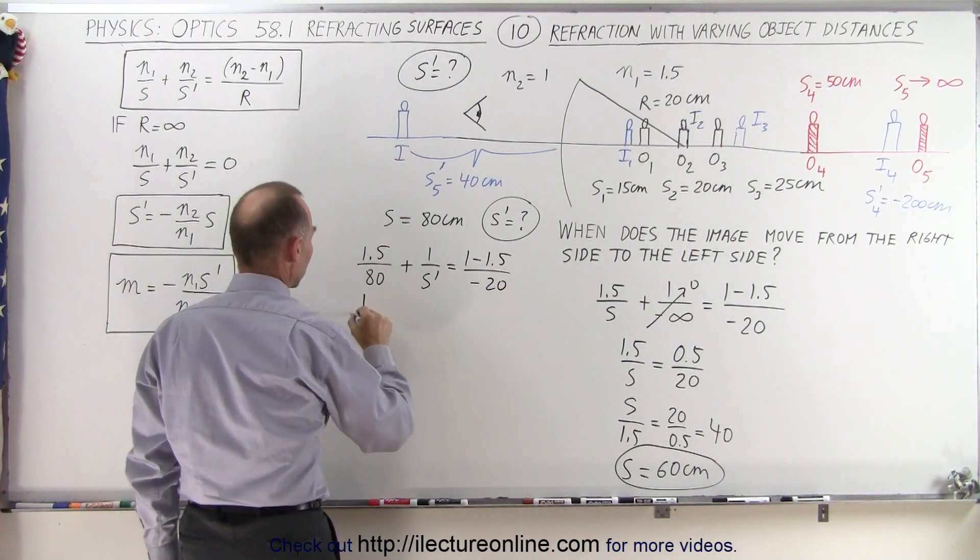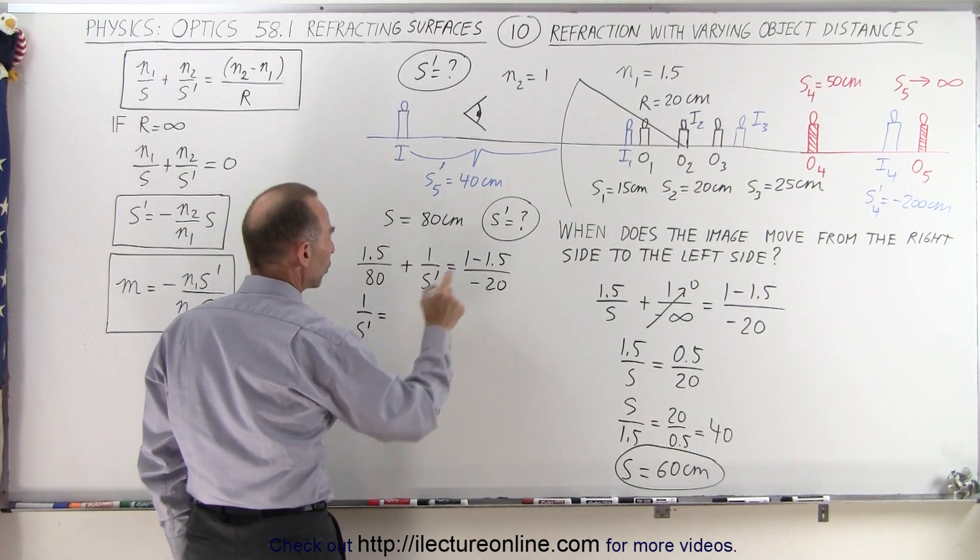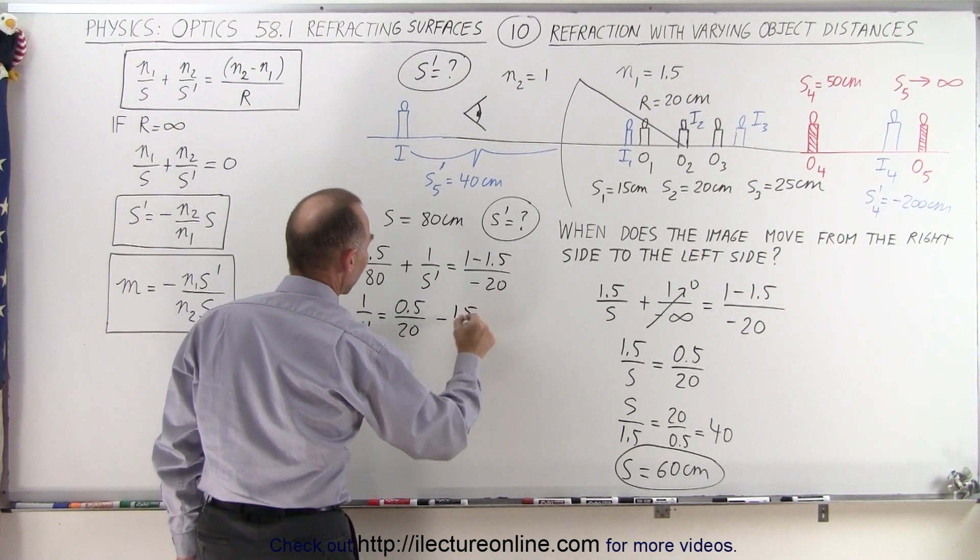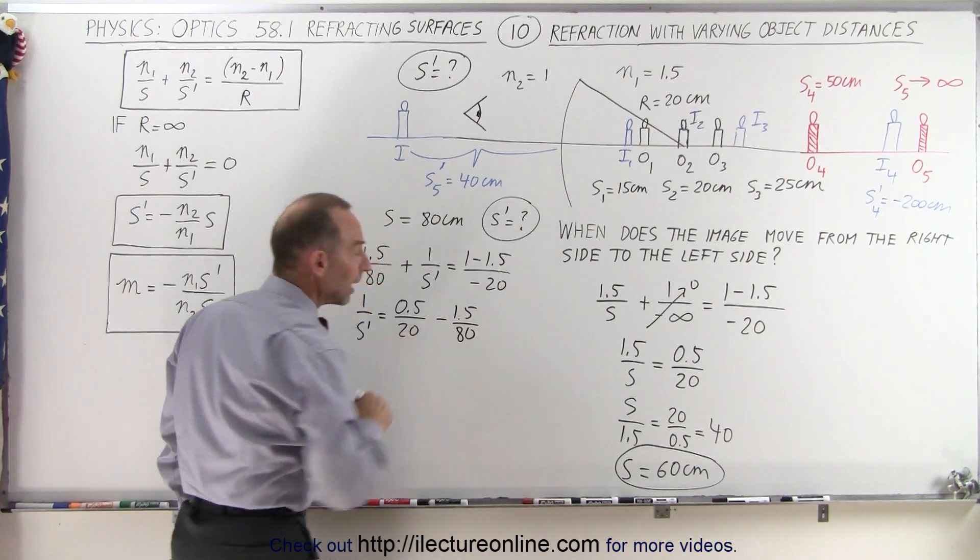Alright, so we have 1 over S' is equal to 0.5 over 20 minus 1.5 over 80. The common denominator is 80.